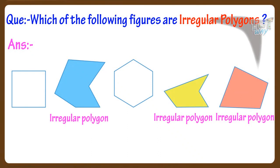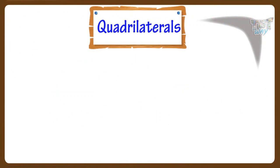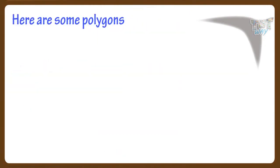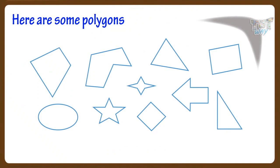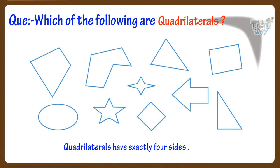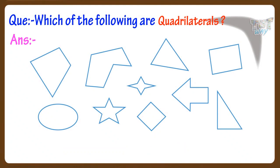Now let's learn what are quadrilaterals. The polygons that have four sides are known as quadrilaterals. Here are some polygons — let's figure out which of the following are quadrilaterals. We know quadrilaterals have exactly four sides, neither more nor less. These shapes have four sides, so these are quadrilaterals.